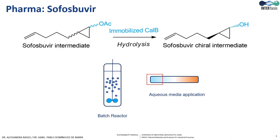Apart from use in non-conventional media, biocatalysis can also be used in aqueous media. Here we have an example using a batch reactor with immobilized Cal-B, but since the process is in aqueous media, we are performing hydrolysis rather than esterification or amidation. The enzyme hydrolyzes only one enantiomer of this molecule, which is an intermediate that can be used in the further synthesis of an antibiotic in the pharmaceutical sector.